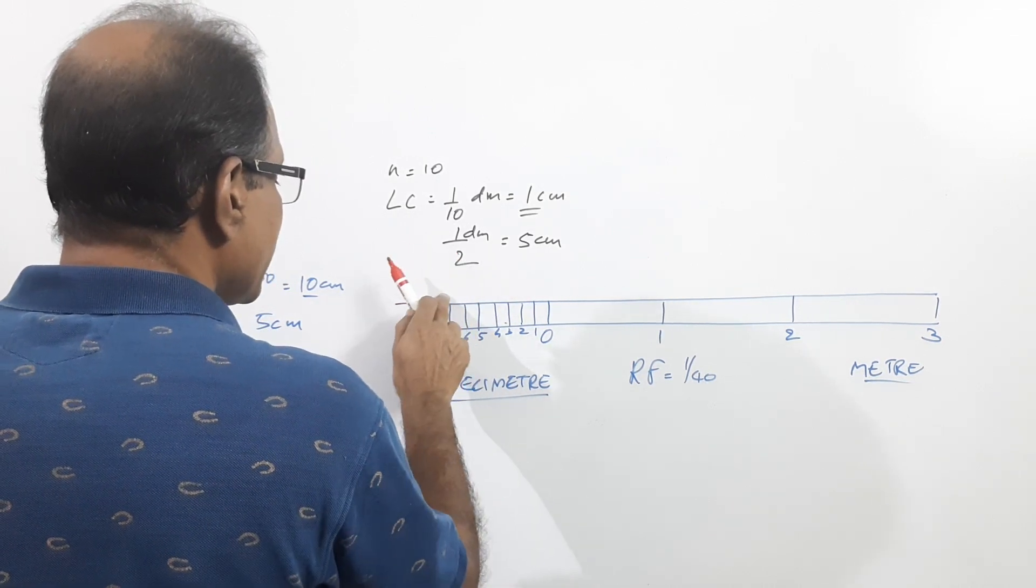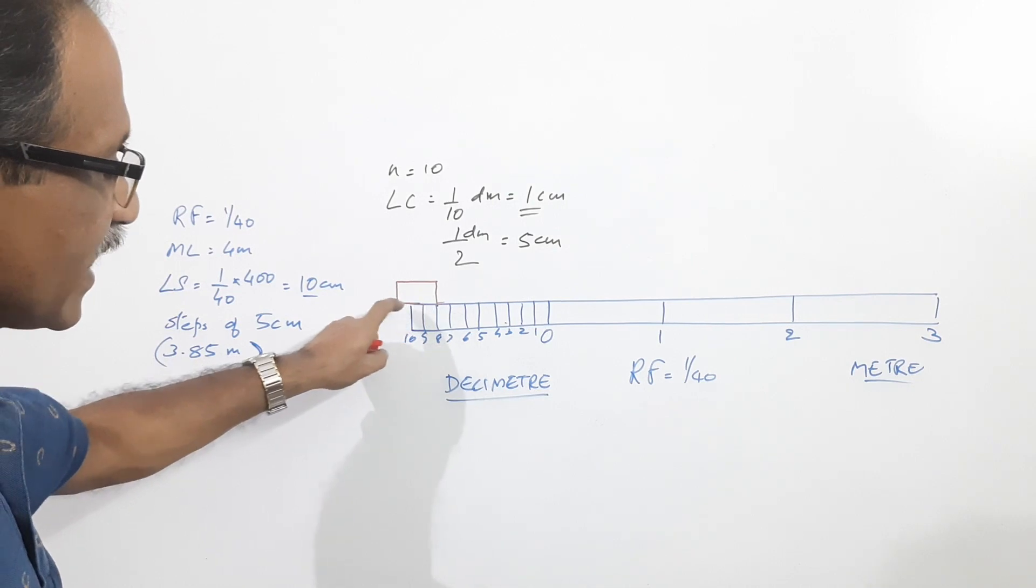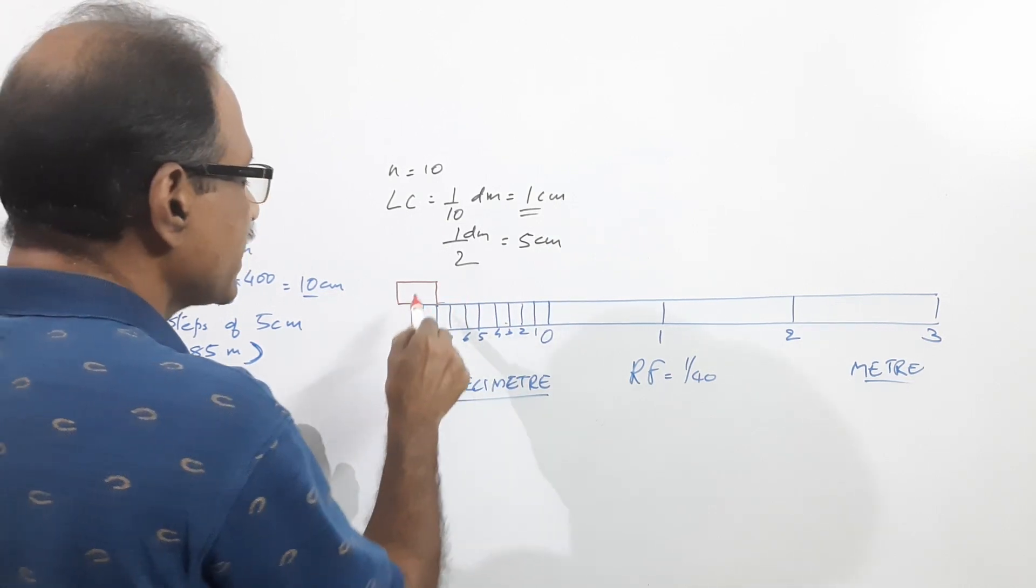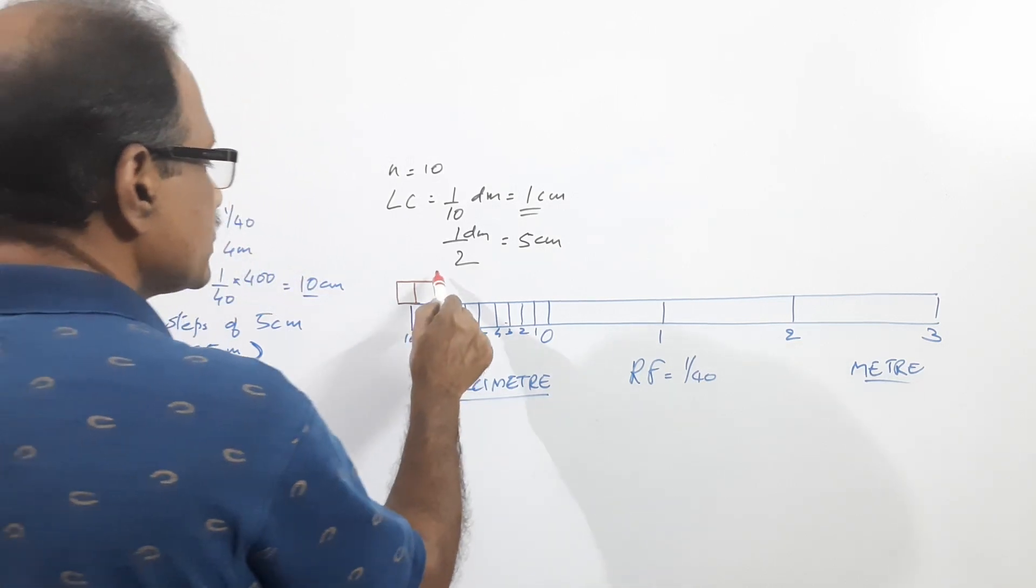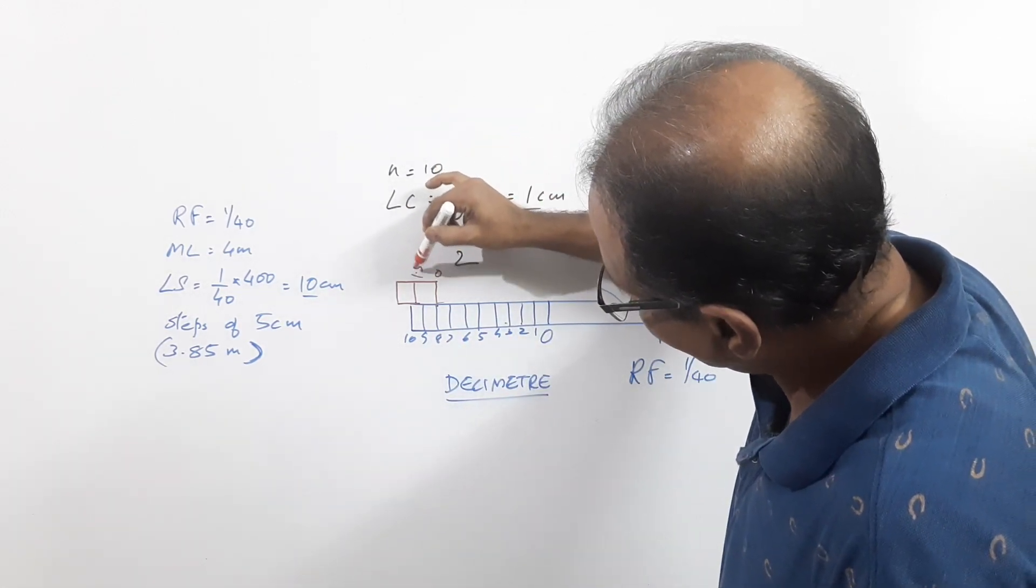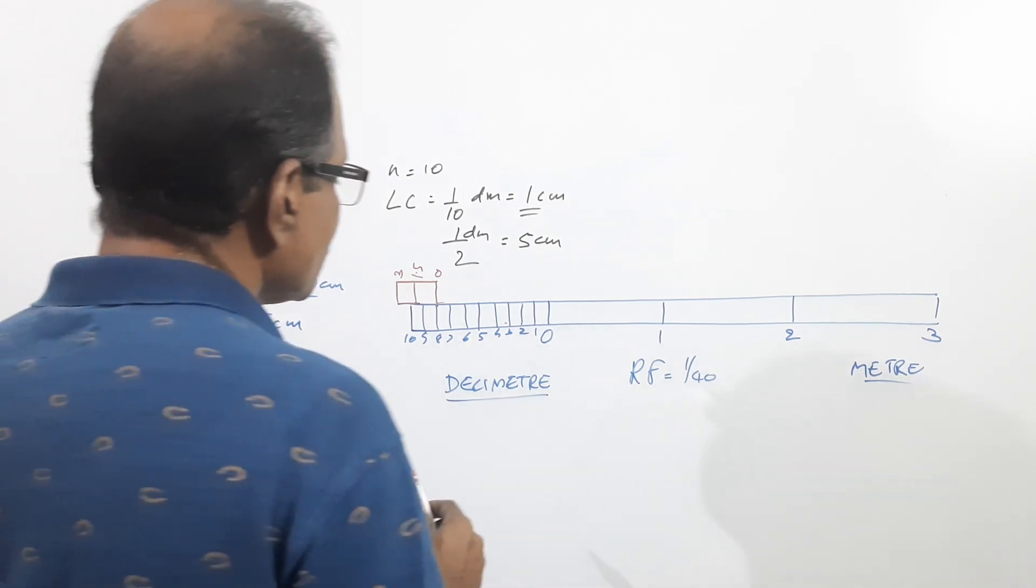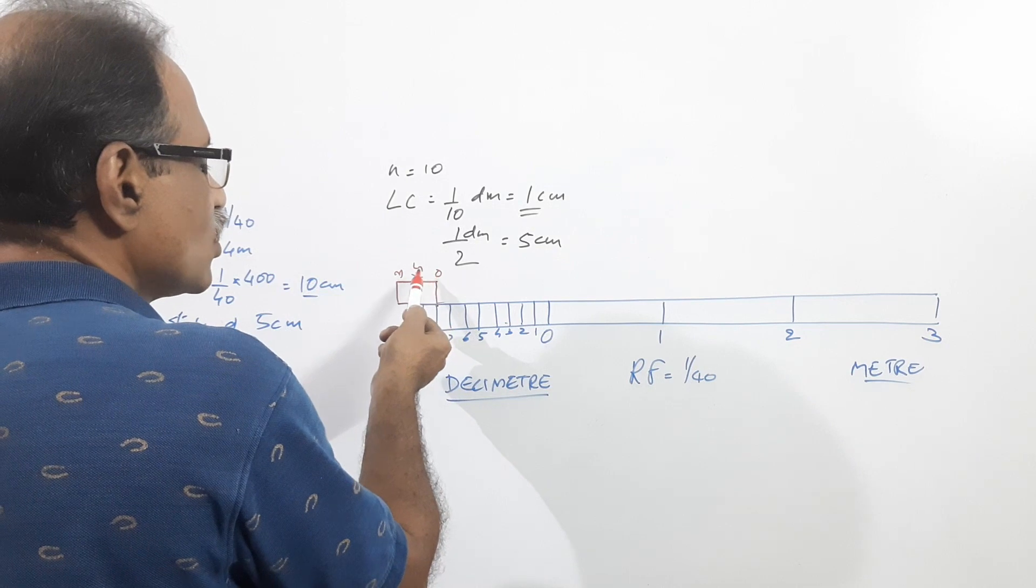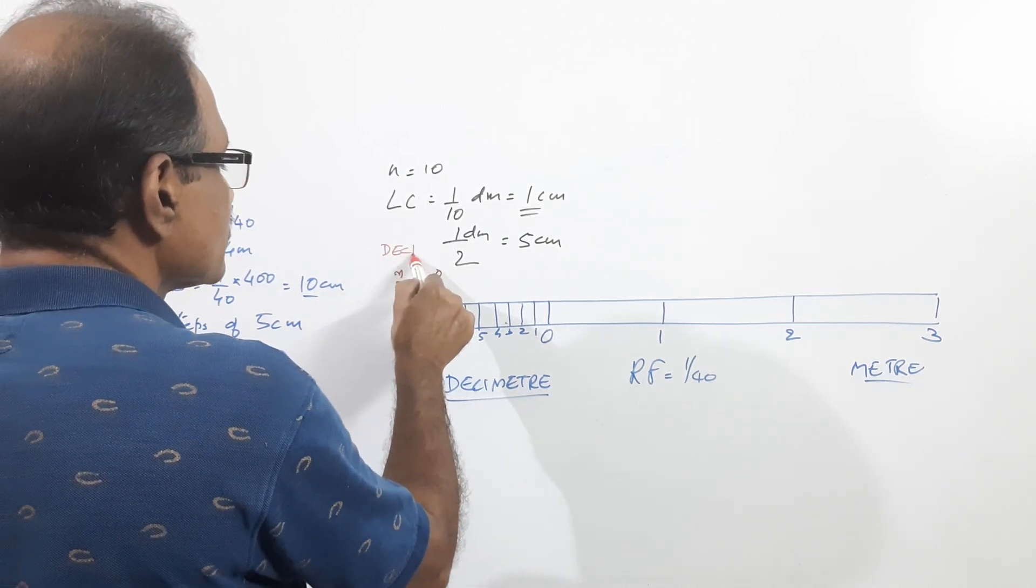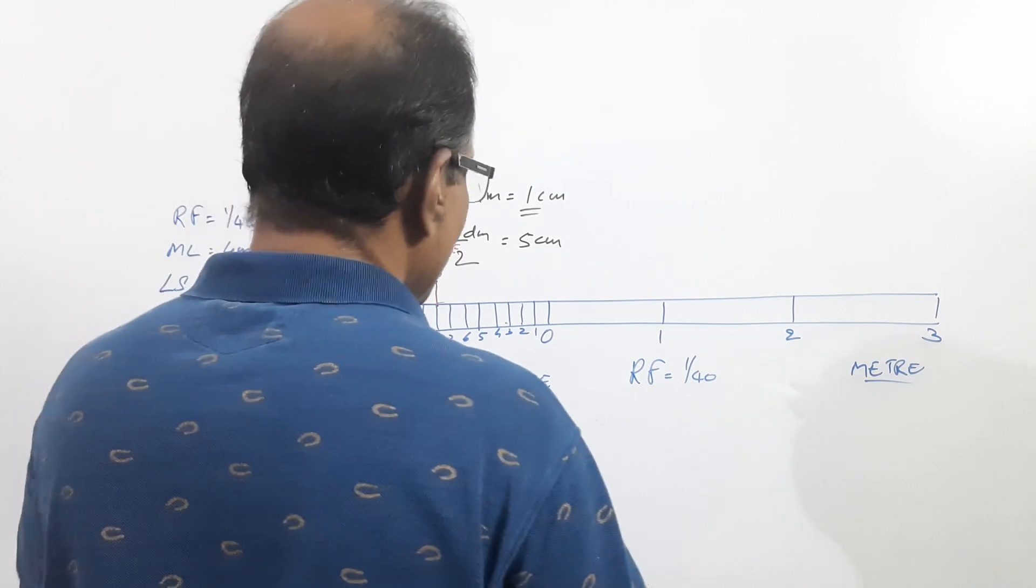If n is equal to 2, what is n plus 1? N plus 1 is 3. Take the distance corresponding to 3 main scale divisions and divide it into 2: 0, 1.5, 3. What is the unit? Unit is decimeter itself. Or you can put 0, 15, 30, unit in centimeters. Since I have put 1.5 and 3, I put that unit as decimeter. Now construction is over.